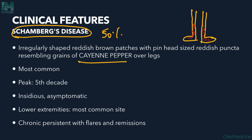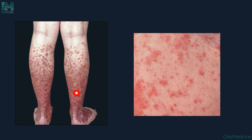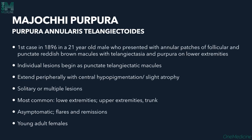Cayenne pepper spots are small red chili-like spots found irregularly on the lower limbs. Schamberg's disease most commonly presents in the fifth decade with an insidious onset. It is asymptomatic, affects the lower extremities, and follows a persistent course with flares and remissions.